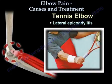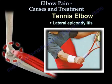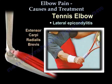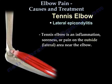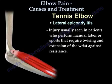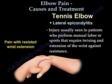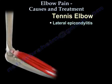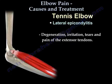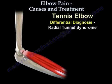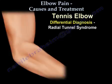Tennis elbow, also called lateral epicondylitis, is due to injury of the extensor carpi radialis brevis. It is an inflammation, soreness, or pain at the outer side of the elbow. The injury is usually seen in patients who perform manual labor or sports that require twisting and extension of the wrist against resistance, with pain during resisted wrist extension.